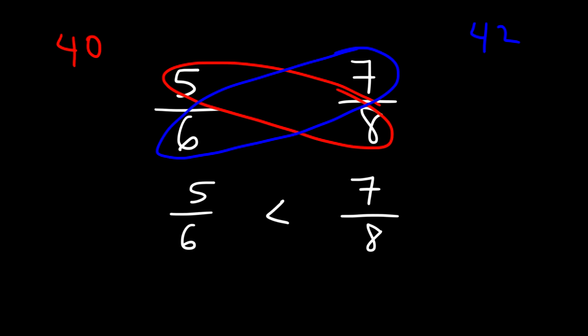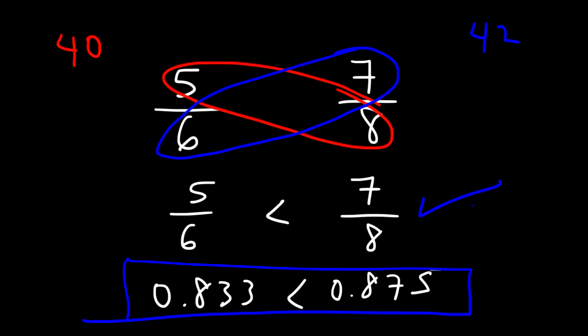And now let's confirm the result using a calculator. So 5 divided by 6 as a decimal is 0.833. 7 divided by 8 as a decimal is 0.875. So clearly 0.875 is greater than 0.833. So 7 over 8 is the fraction with a greater value.